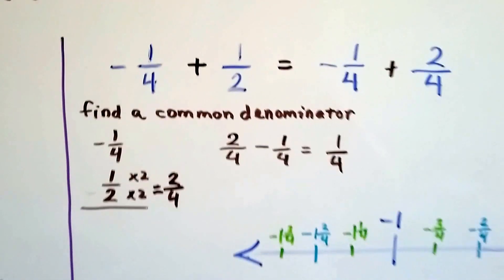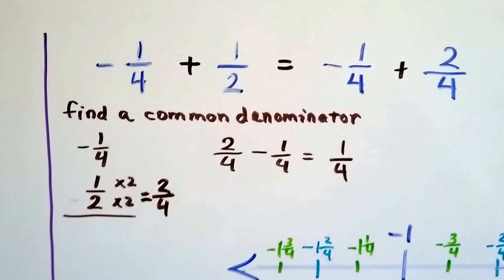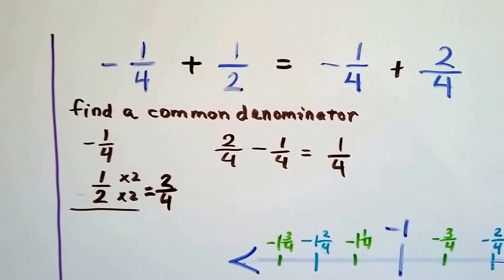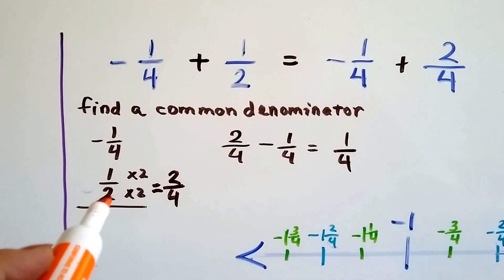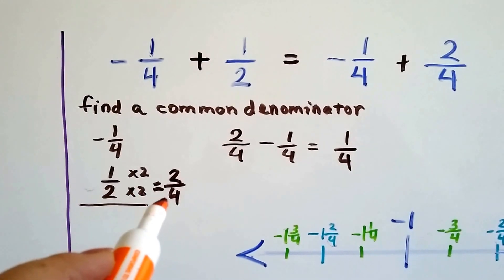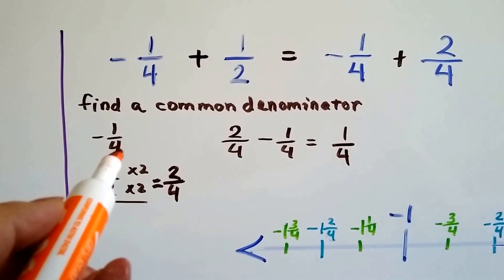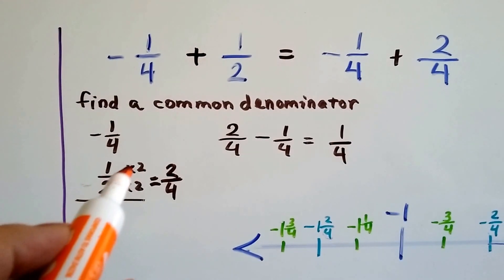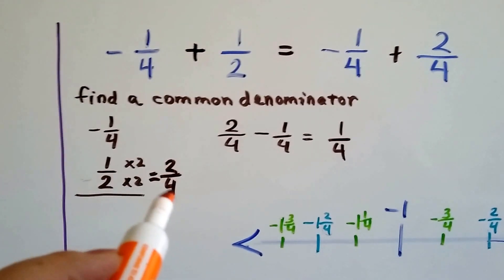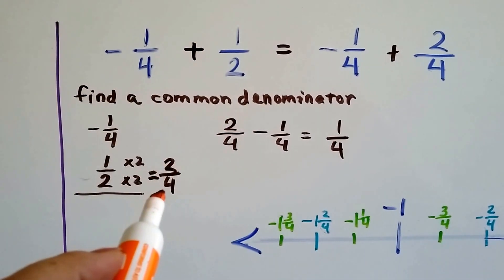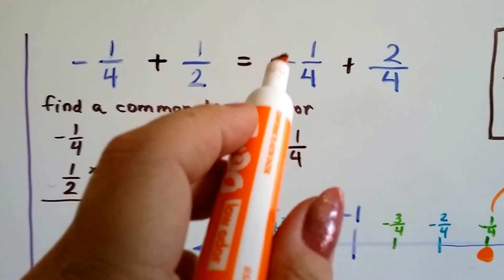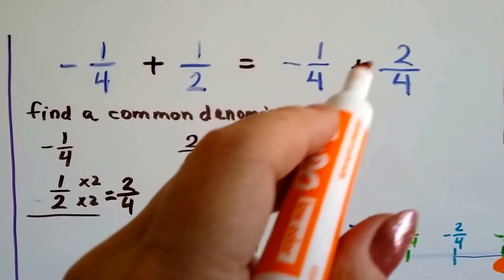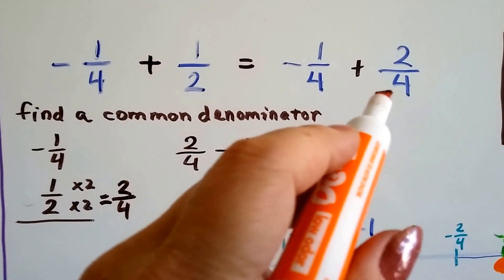Alright. So, now we do have negative 1 fourth plus a half. And that half is positive, isn't it? So, we need to find a common denominator. So, I multiplied the 2 times 2 to make it a 4 to meet at 4's house. Now, the 1 got jealous, it got multiplied by 2, and we've got 2 fourths. But it's positive 2 fourths, okay? So, now our equation becomes negative 1 fourth plus 2 fourths, okay?